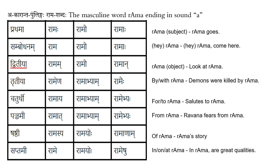The root word of a noun, which is called Pratipadikam in Sanskrit, is identified by its gender and ending sound, shown at the top. Here you can see 'akarantha pullingah Rama shabdaha', which means the masculine word Rama ending in sound 'a'. Rama is the root word or Pratipadikam, and it ends in the sound 'a'.